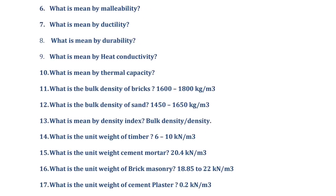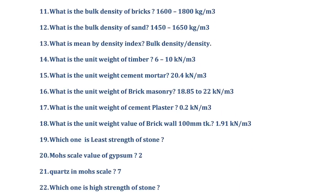Next we will move to the important values of some properties of materials. What is the bulk density of bricks? The bulk density of bricks lies between 1600 to 1800 kg per meter cube. What is the bulk density of sand? It is 1450 to 1650 kg per meter cube. So the bulk density of sand is always less than the bulk density of bricks.